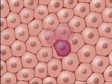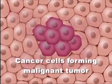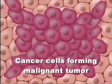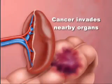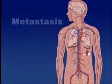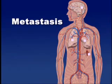However, if cells are cancer cells, they grow, divide, and eventually form malignant tumors. Malignant tumors, unlike benign tumors, invade and destroy surrounding tissues and nearby organs. Eventually, cancer cells break off and spread through the blood or lymphatic system to form new tumors in other parts of the body. This process, the spread of cancer from its original site, is known as metastasis.